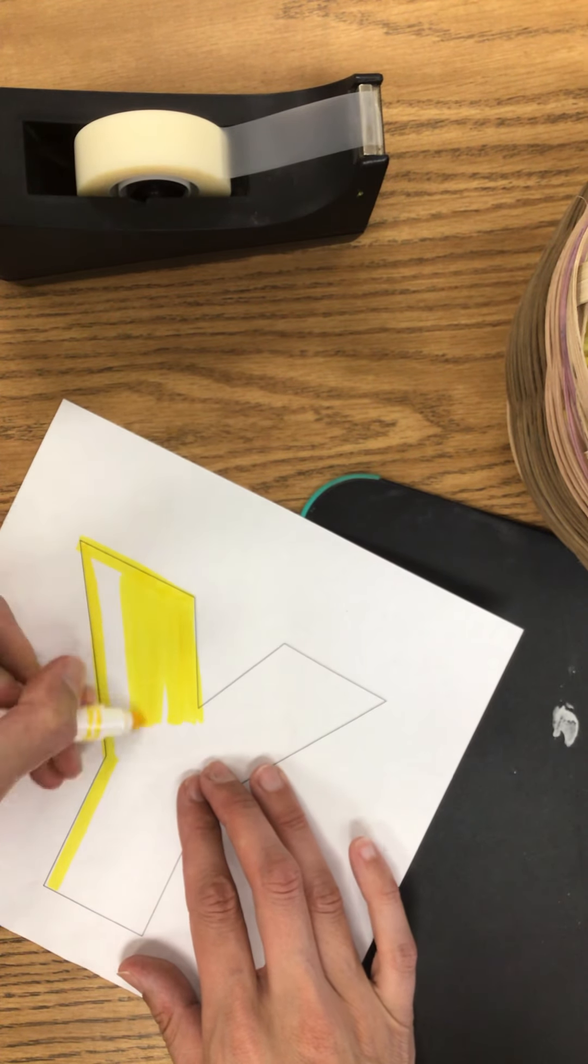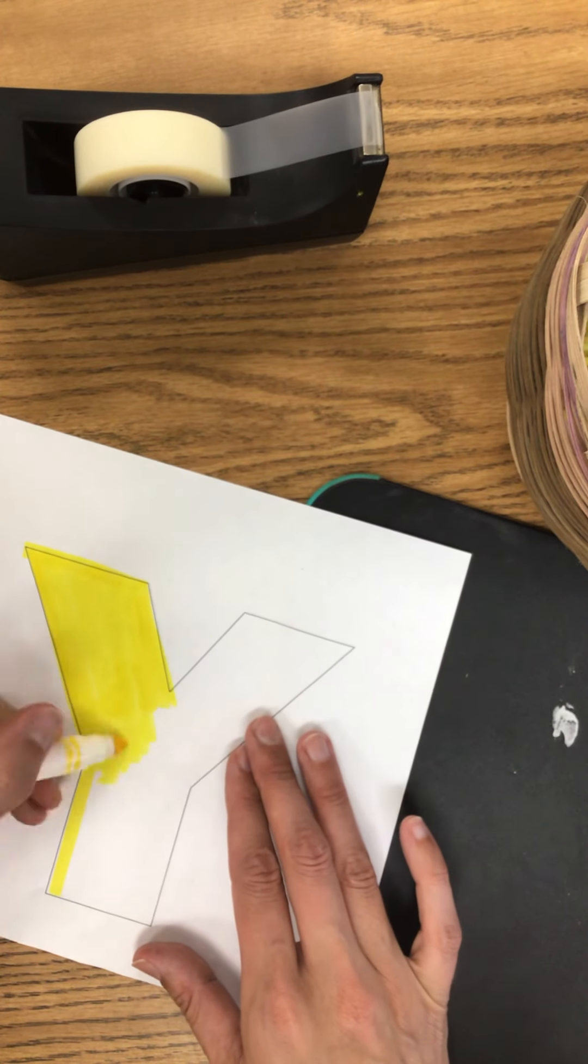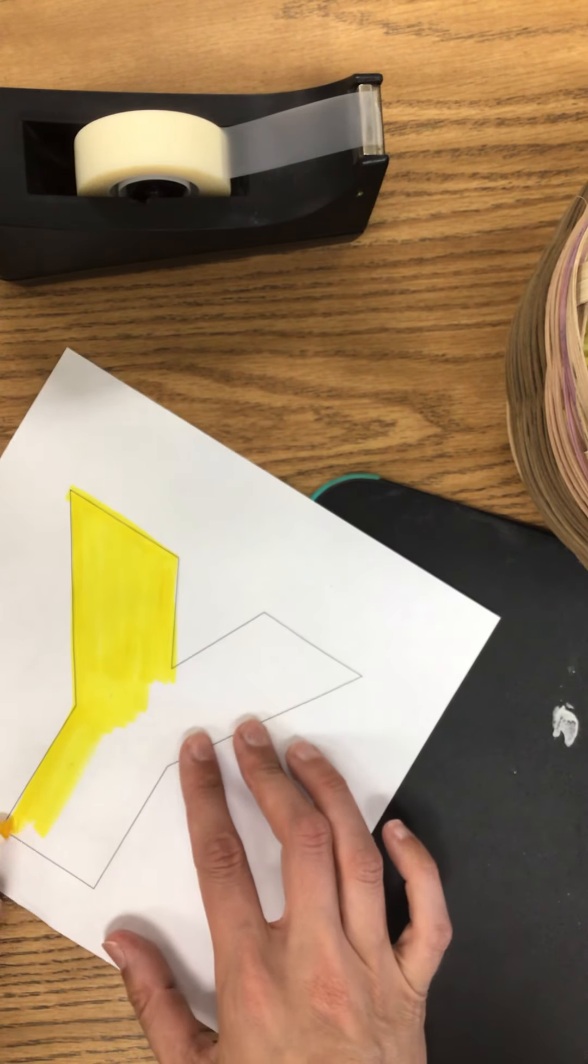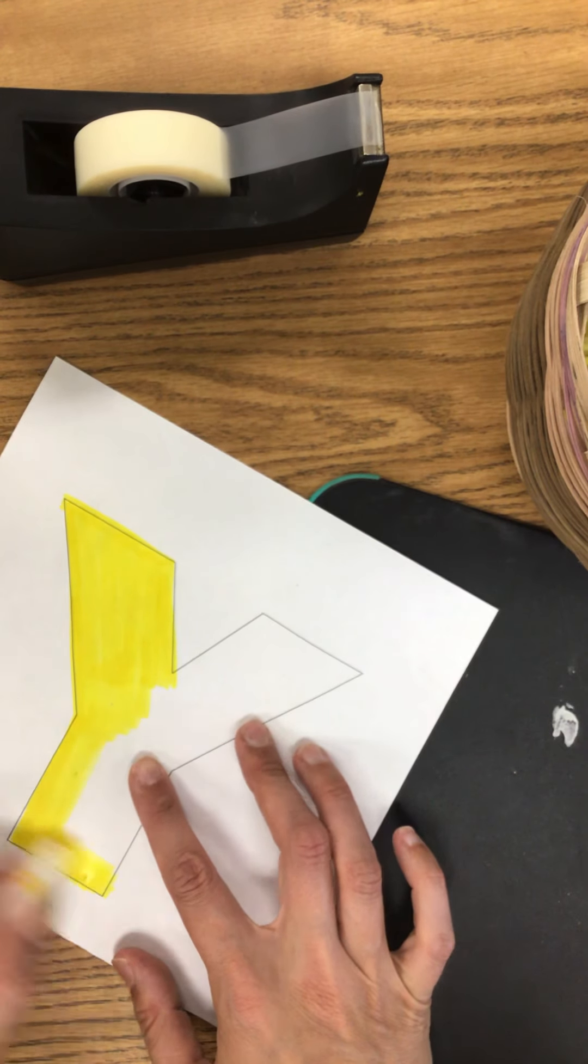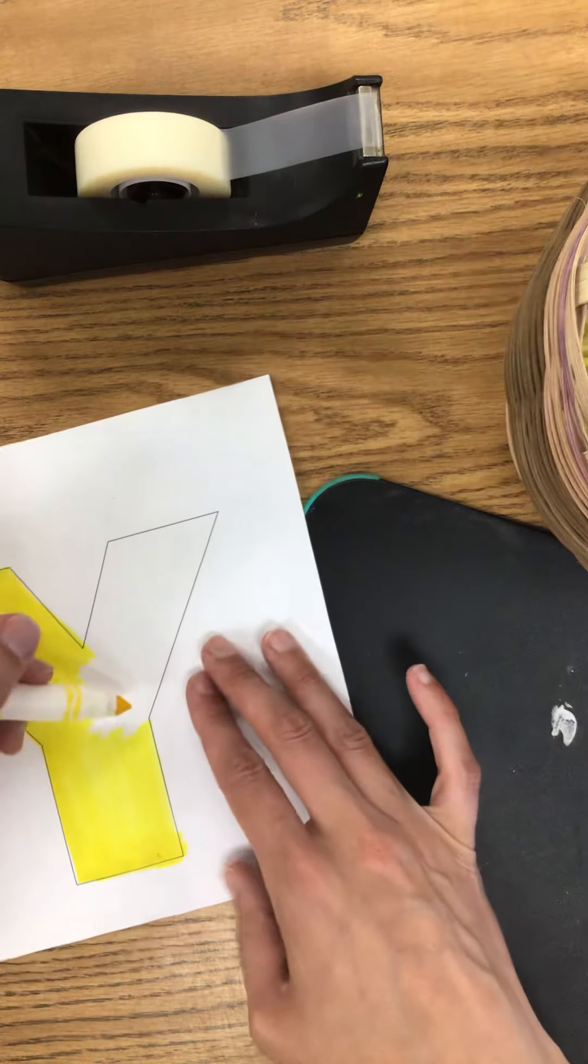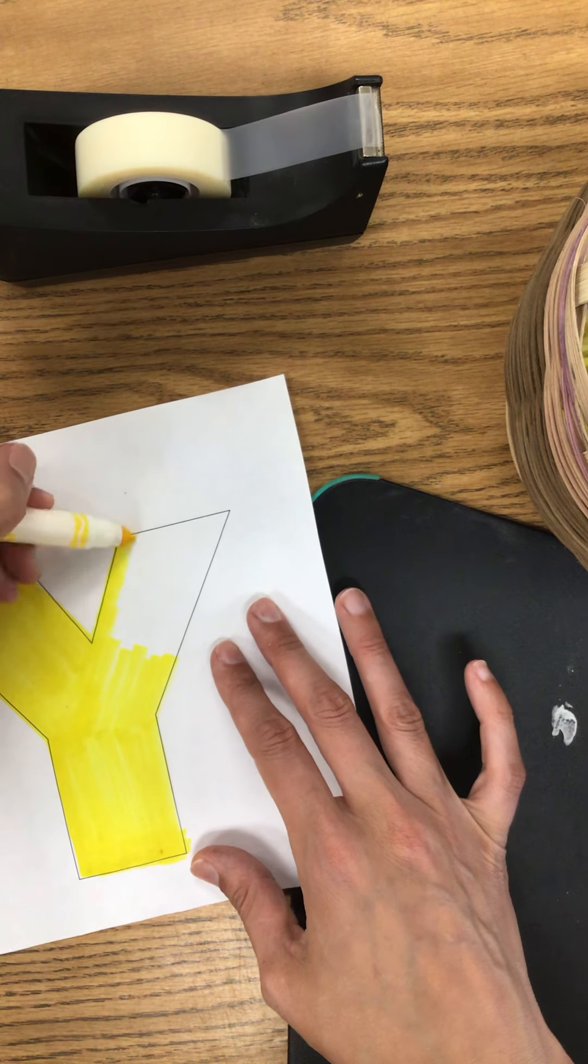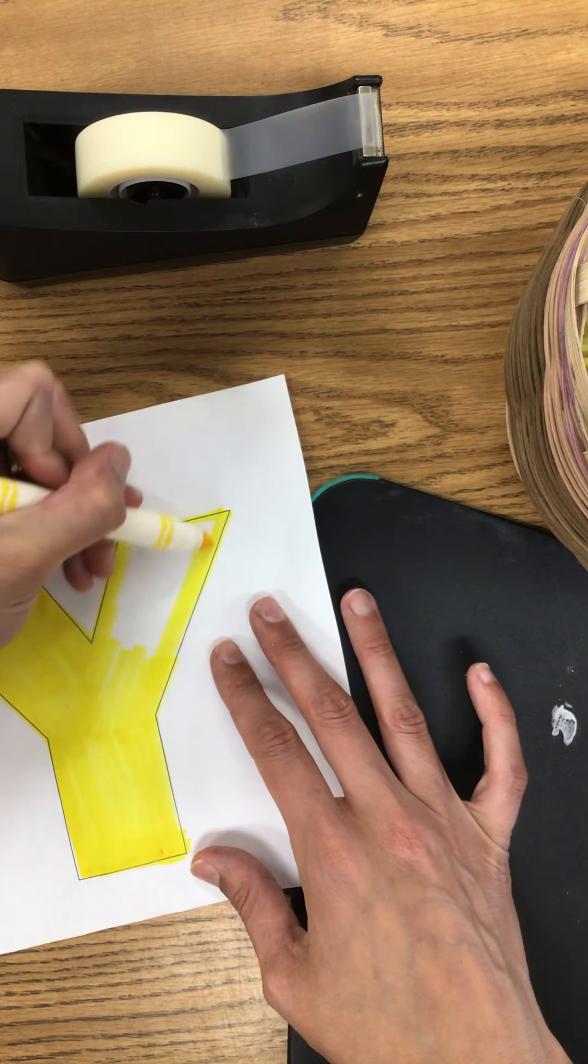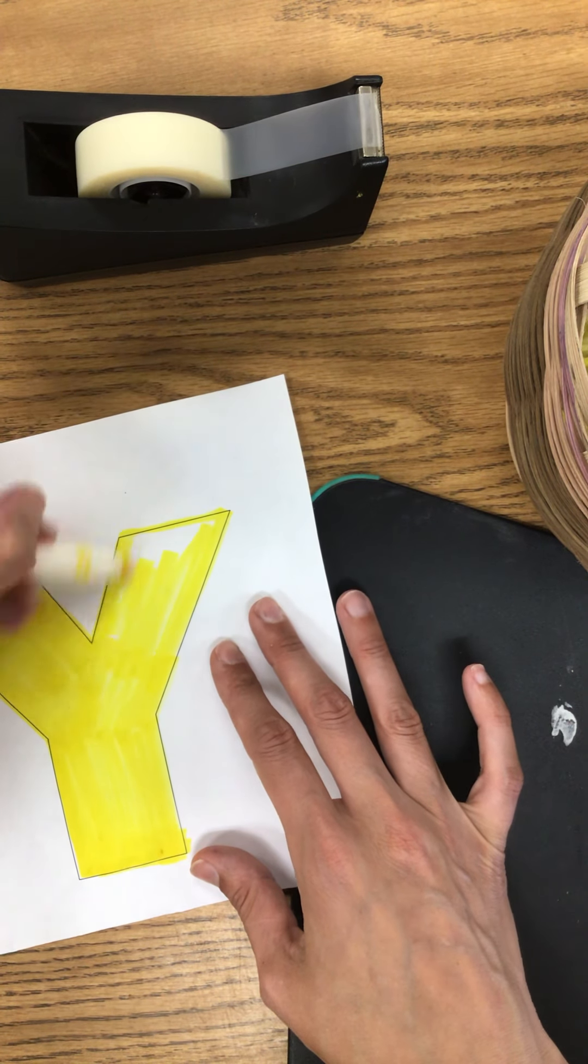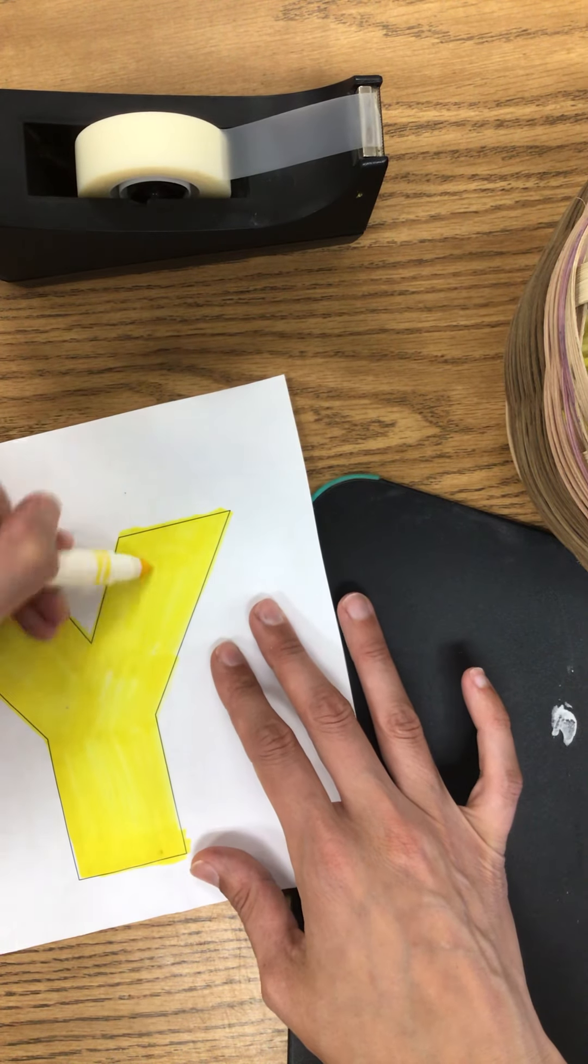Some of my kindergartners today just chose to just draw a big letter Y and then color it in and that works too. I understand I don't have a printer at my house either, but I am just going to go ahead and color in my letter Y. You can have a grown-up draw a big letter Y for you and you can color it in.